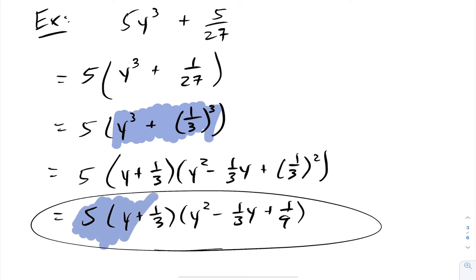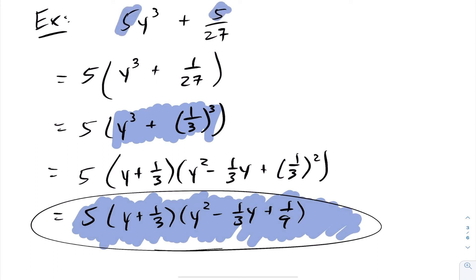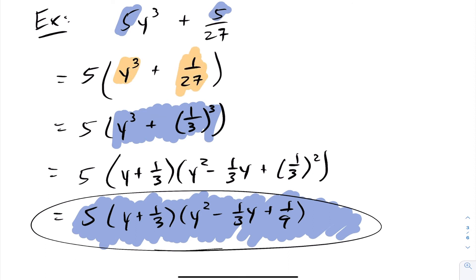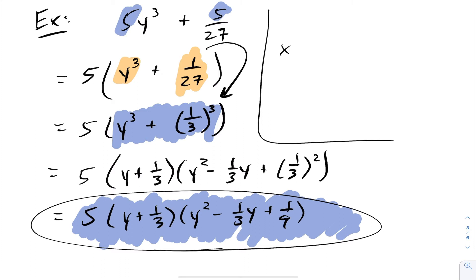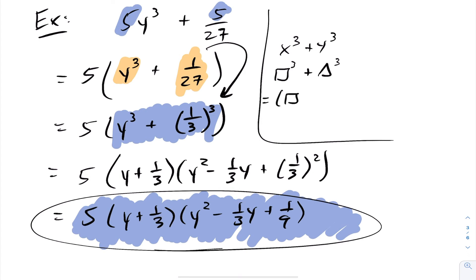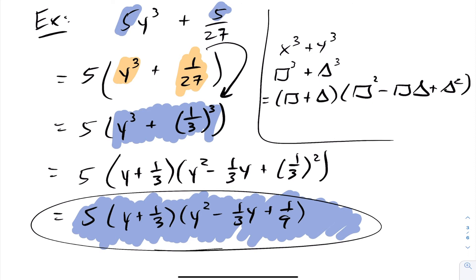Notice the general idea: first decide if it's sum or difference of cubes, then check for a GCF, then express each term as a power of 3. The x and y in the formula are just placeholders — you can think of it as box cubed plus triangle cubed, which factors into box plus triangle, times box squared minus box times triangle plus triangle squared. They don't have to be single variables; they can be expressions, numbers, etc.